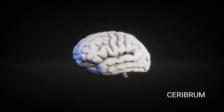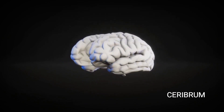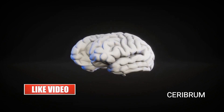The cerebrum has four major lobes. The frontal lobe is situated anterior to the central sulcus. It is associated mainly with voluntary motor functions, planning, motivation, emotion and social judgment.